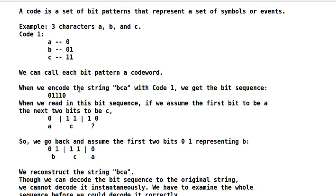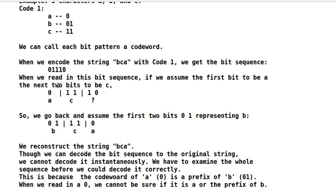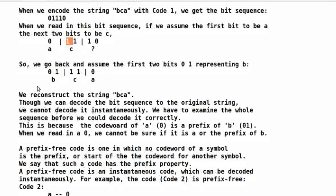When we encode the string BCA with code 1, we get the bit sequence 01110. When we read in this bit sequence, if we assume the first bit 0 represents A, the next two bits to be C, then we have one 0 left which does not represent anything. So we go back and assume the first two bits 01 represent B, the next two bits 11 represent C and the last bit 0 represents A, and reconstruct the string BCA.